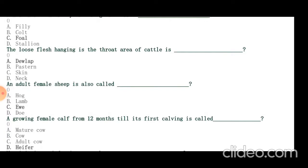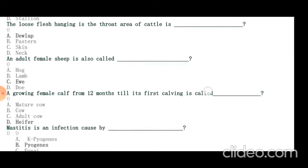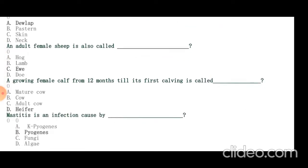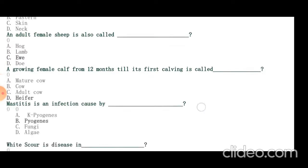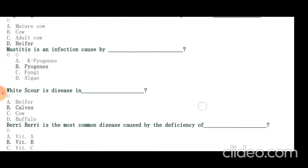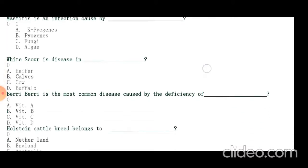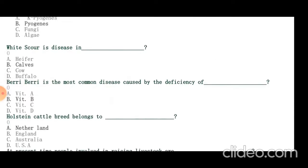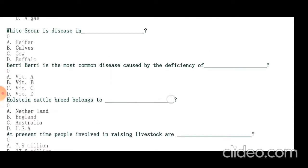A growing female calf from 12 months till its first calving is called heifer. Mastitis is an infection caused mostly by the bacteria Staphylococcus aureus. White scour is a disease in calves. Beriberi is caused by deficiency of vitamin B. Holstein cattle breed belongs to Netherlands.